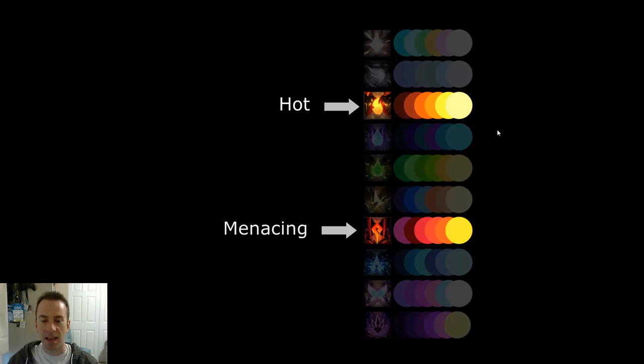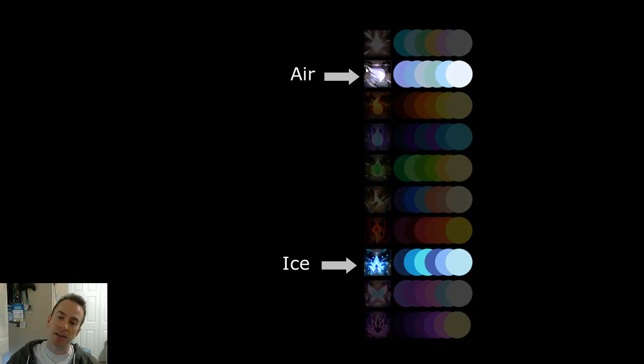Fire reds are hot, and adding in more of the pinkish stuff makes it feel a little more menacing. For air and ice — air is basically all the same hues as ice, but just more desaturated. So you've got hue, which you can adjust — red, blue, purple, whatever — but then you've also got saturation.